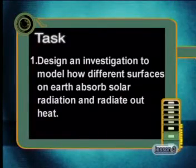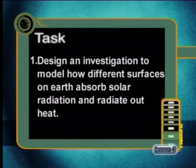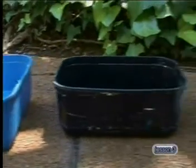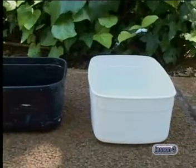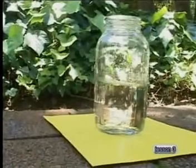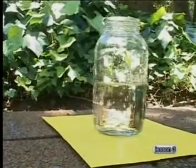Disturbing the fine balance in the atmosphere that protects us can be disastrous to us and our environment. Are we looking after our atmosphere adequately? We will consider this question in the next lesson. Before you go, have a look at today's task: design an investigation to model how different surfaces on the Earth absorb solar radiation and radiate out heat. You could measure the temperature of water in different colored containers left in the sun for the same amount of time, or measure the temperature of water placed in a clear glass container above different colored surfaces.